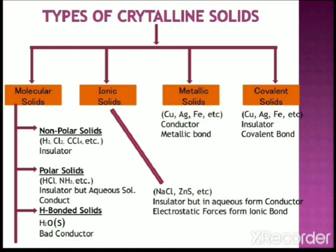Metallic solids are orderly collections of positive ions surrounded by and held together by a sea of free electrons. These mobile electrons are evenly spread throughout the crystal. Each metal atom contributes one or more electrons to this sea of mobile electrons. These free and mobile electrons are responsible for the high electrical and thermal conductivities of metals when an electrical field is applied. Examples: copper, silver, iron, etc.